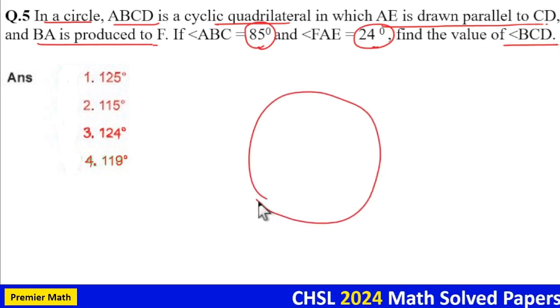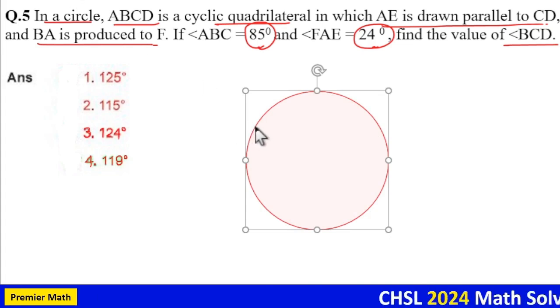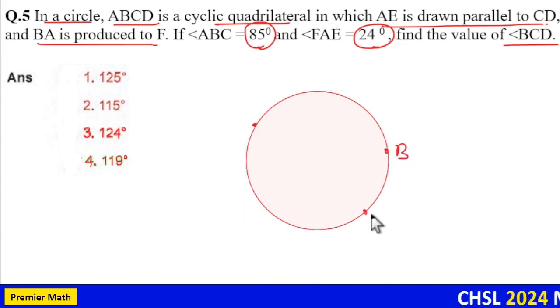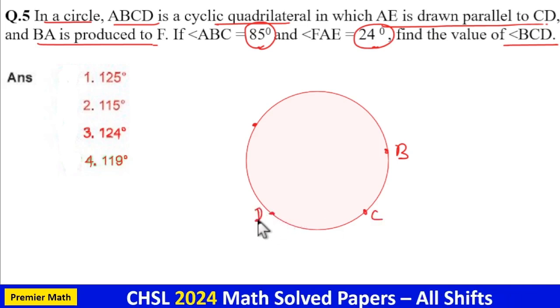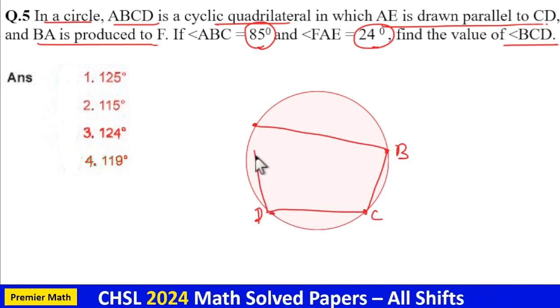Here this is a circle and ABCD is a cyclic quadrilateral. In a cyclic quadrilateral, the sum of opposite angles is 180 degrees.